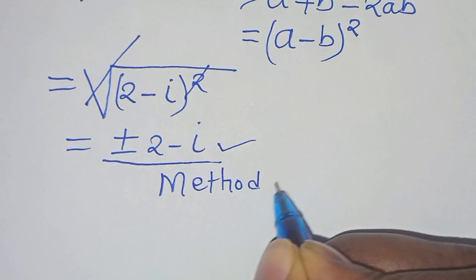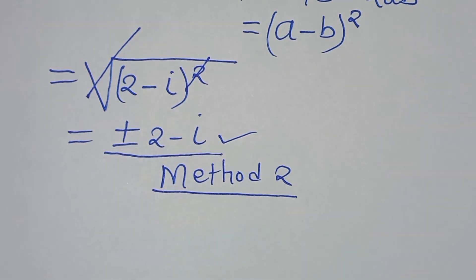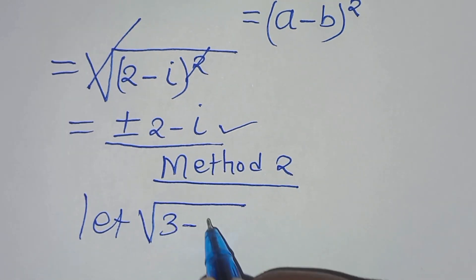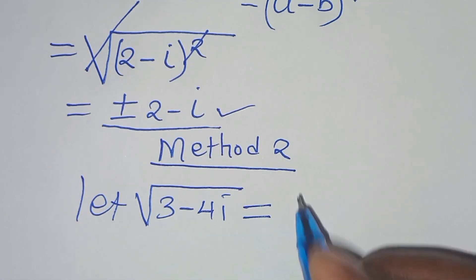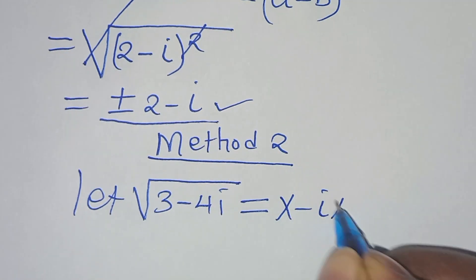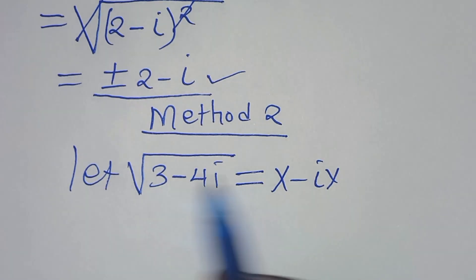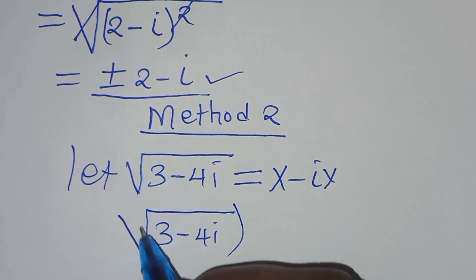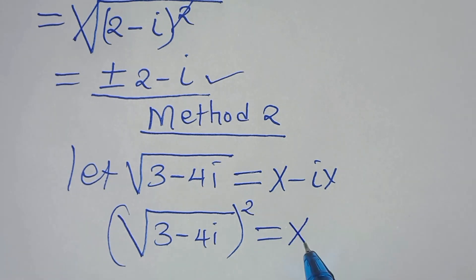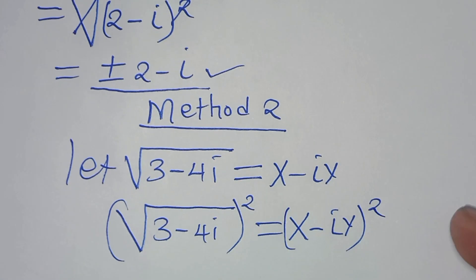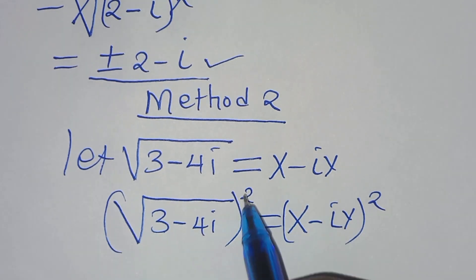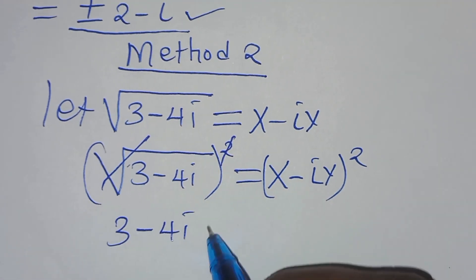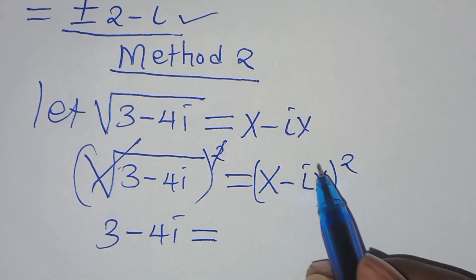Let's proceed to method 2. So from here, we let the square root of 3 minus 4i be equal to x minus iy. The next step from here is to square both sides. So this is squared, this is equal to x minus iy raised to the power of 2. Squaring eliminates the square root sign, so that now we have 3 minus 4i is equal to x minus iy squared.